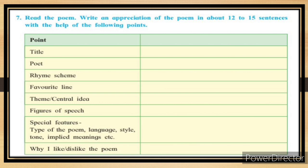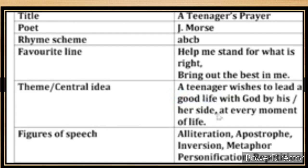Read the poem and write an appreciation in about 12 to 15 sentences using the following points: title, poet, rhyme scheme, favorite line, theme/central idea, figures of speech, special features, type of poem, language/style/tone, and whether you like or dislike it. Title: A Teenager's Prayer. Poet: Jay Morse. Rhyme scheme: A B C B. Favorite line: 'Help me stand for what is right, bring out the best in me.' Theme: A teenager wishes to lead a good life with God by their side. Figures of speech: alliteration, apostrophe, inversion, metaphor, personification, repetition.